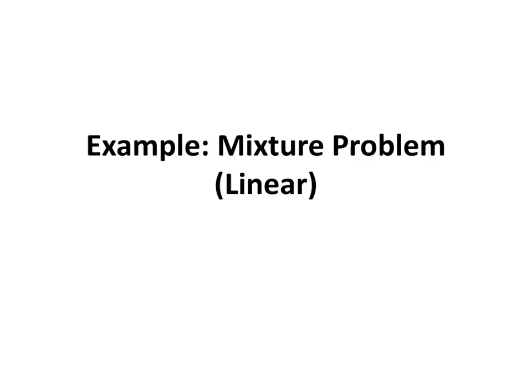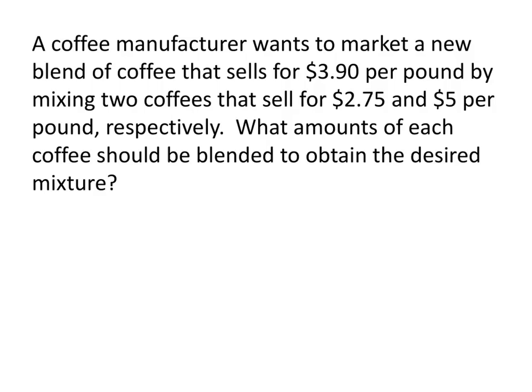In this video, we'll see an example of a mixture problem involving linear equations. Here's the problem: a coffee manufacturer wants to market a new blend of coffee that sells for $3.90 per pound by mixing two coffees that sell for $2.75 and $5.00 per pound, respectively. What amounts of each coffee should be blended to obtain the desired mixture?